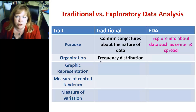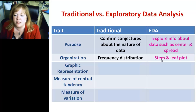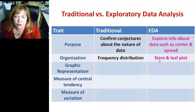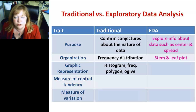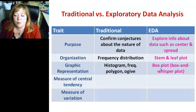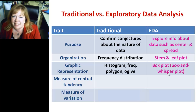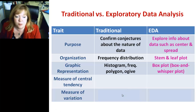Organization: in traditional statistics, they use frequency distributions — which you're familiar with — with cumulative frequencies and so on. In exploratory data analysis, they organize stuff in stem-and-leaf plots; the basic thing is you're going to put data in order, you're going to sort the data. For graphic representations, traditional statistics uses histograms, frequency polygons, ogives, and so on. In EDA, they use box plots — you might know them as box-and-whisker plots. That should have been 'whisker,' not 'whisper' — that's a typo. You may have done those already; they're easy. You're going to love them.